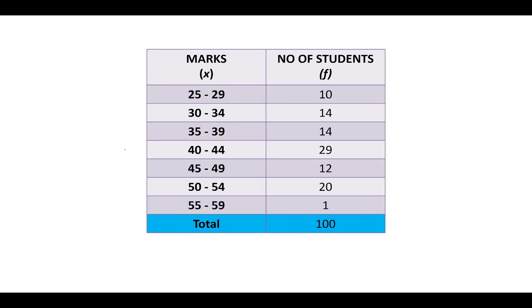But if you observe carefully, you will notice that if there is a continuous variable — suppose a student has got 29.5 marks — you will realize that he can neither be placed in the interval 25 to 29 nor in the class interval 30 to 34. So we will use a different type of class interval.